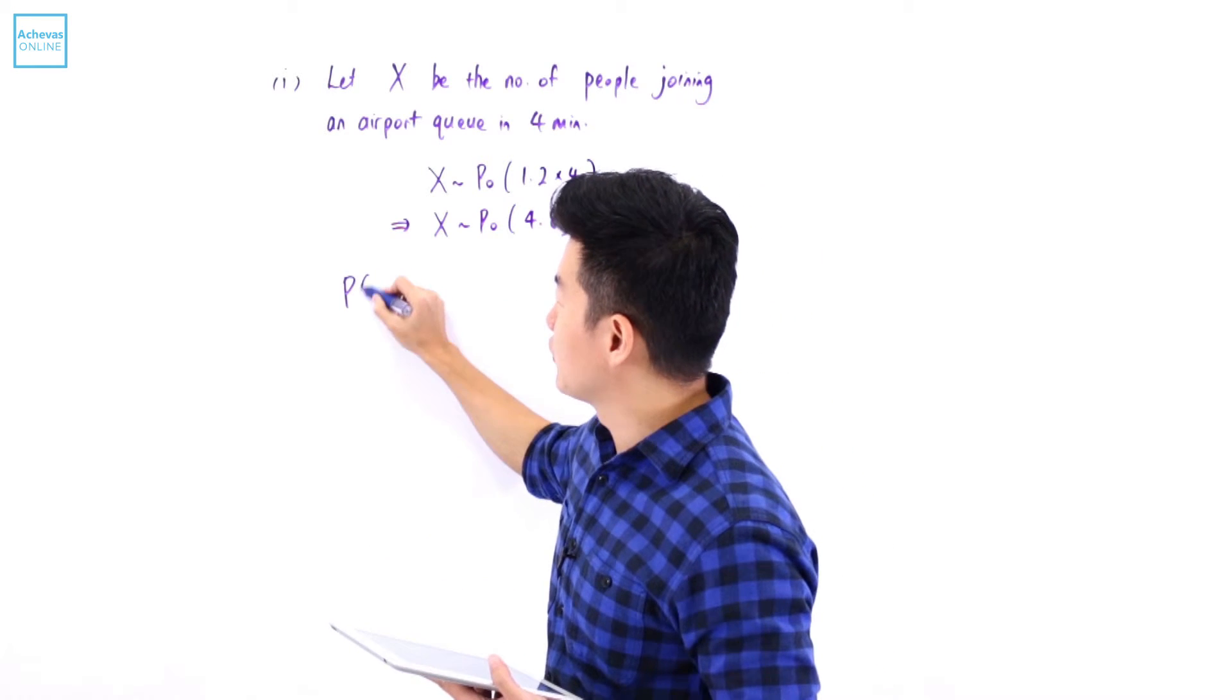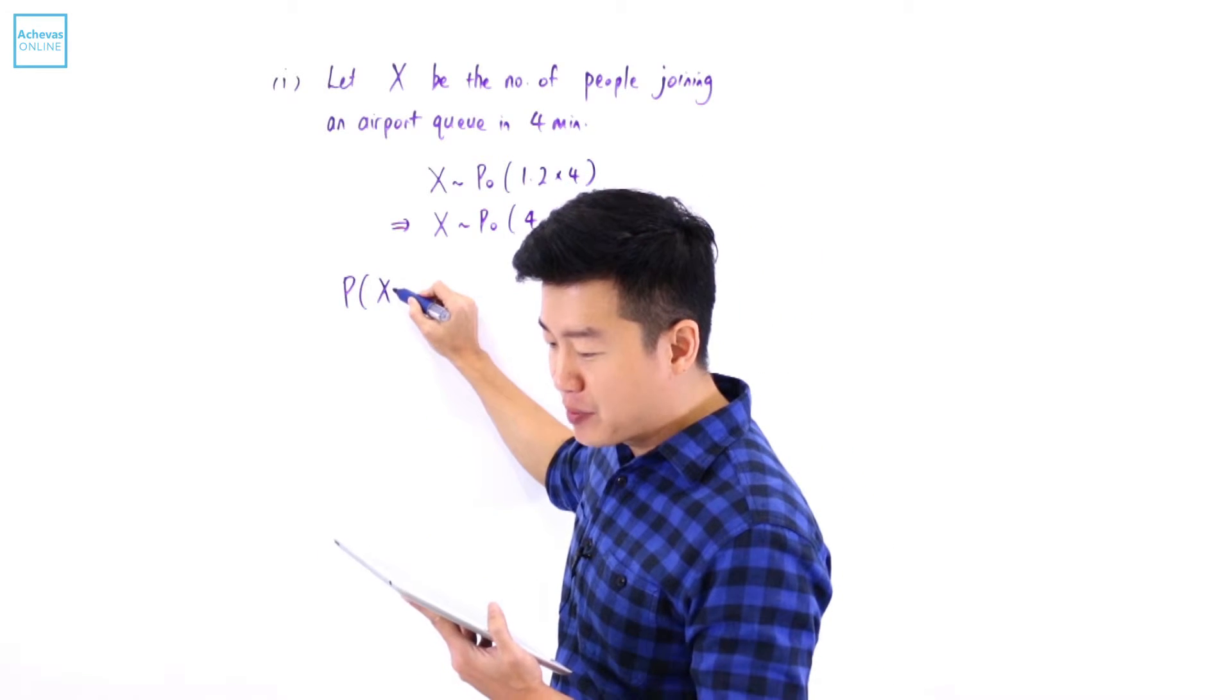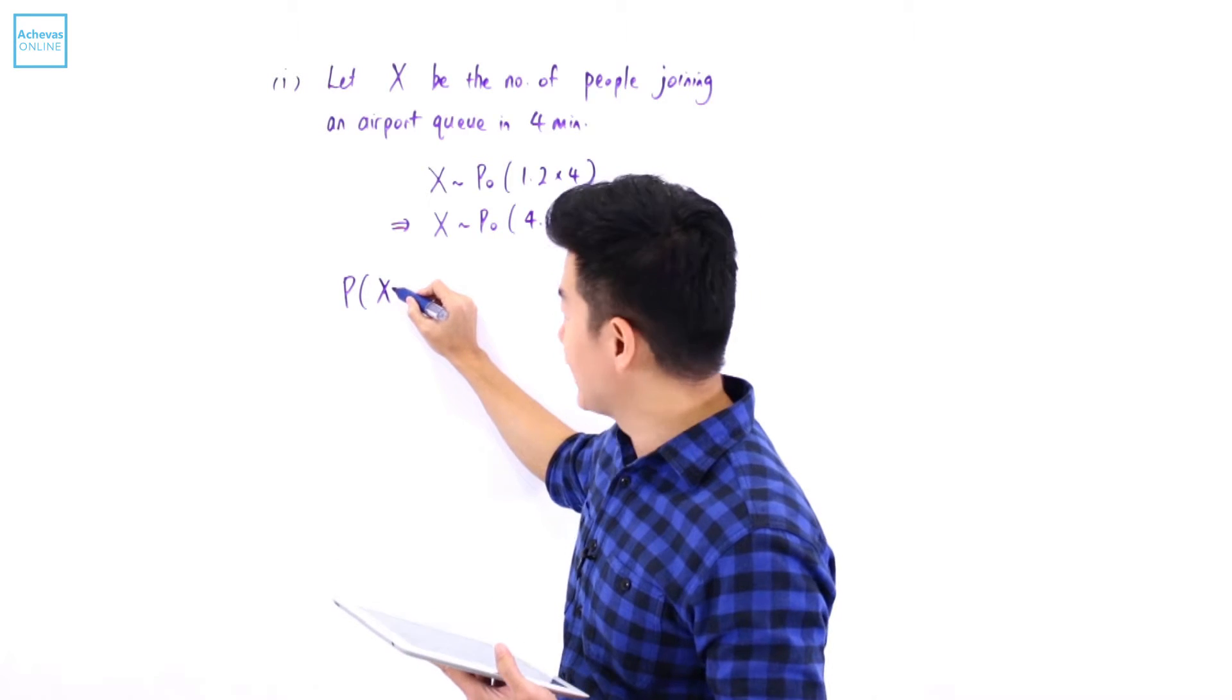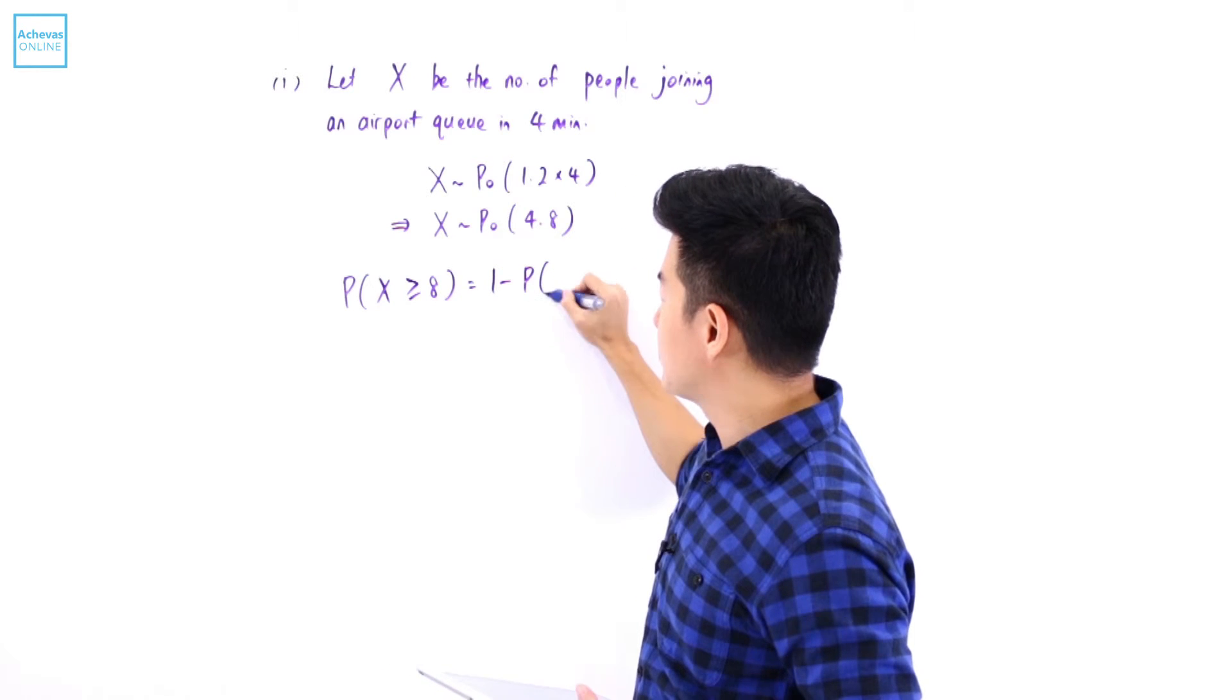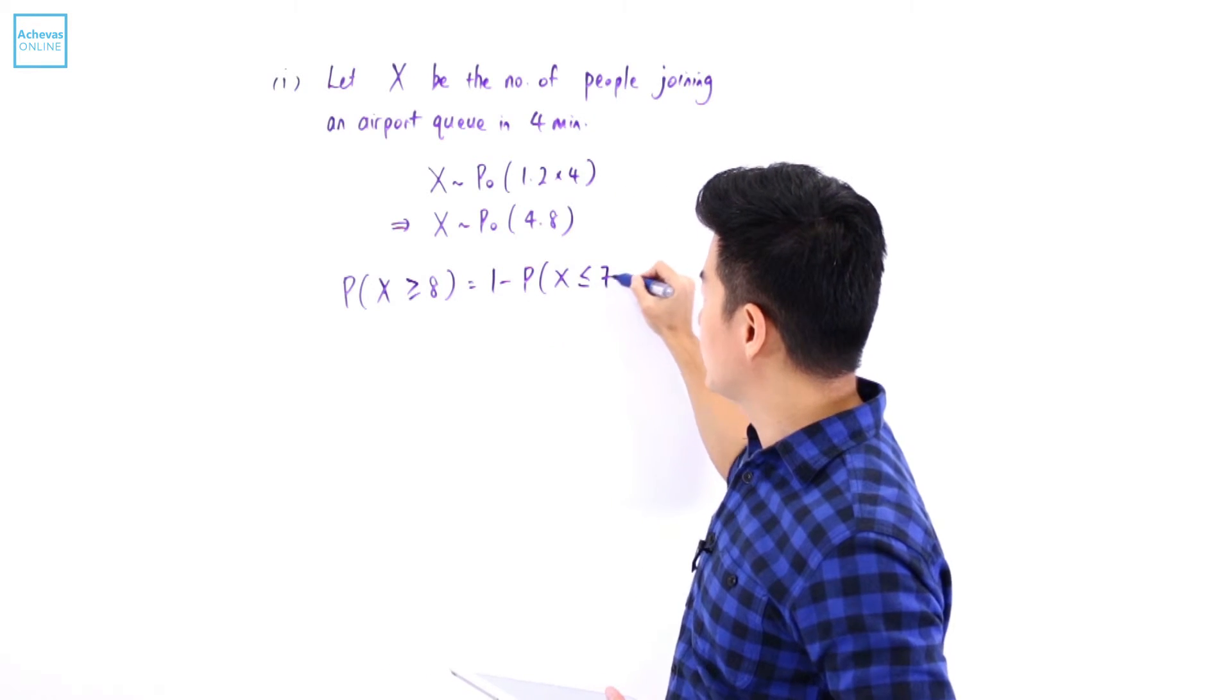And what question 1 asks us to find is the probability that the number of people who join the queue is at least 8. So X is going to be bigger or equal to 8, which is equal to 1 minus probability that X is less than or equal to 7.